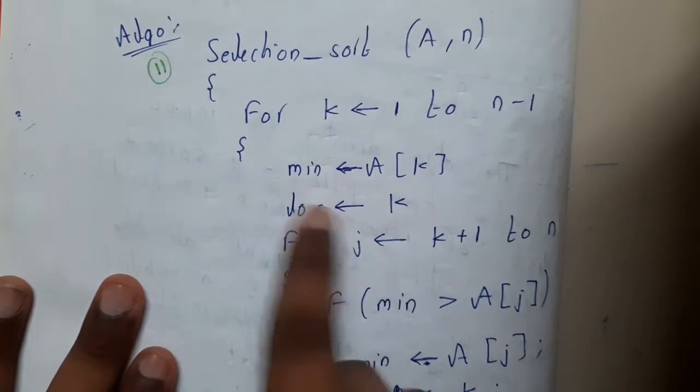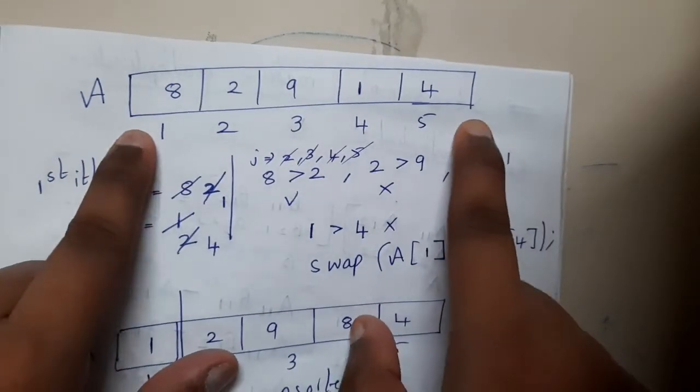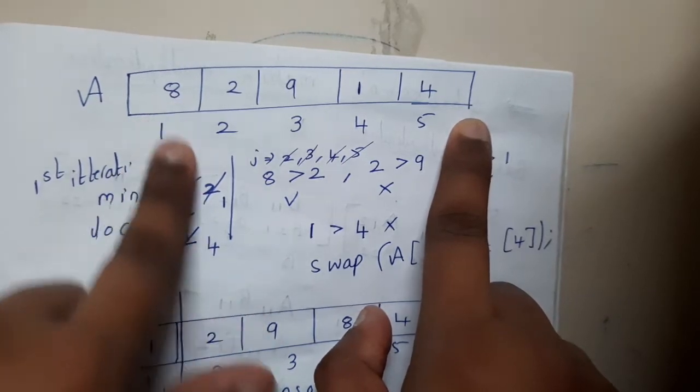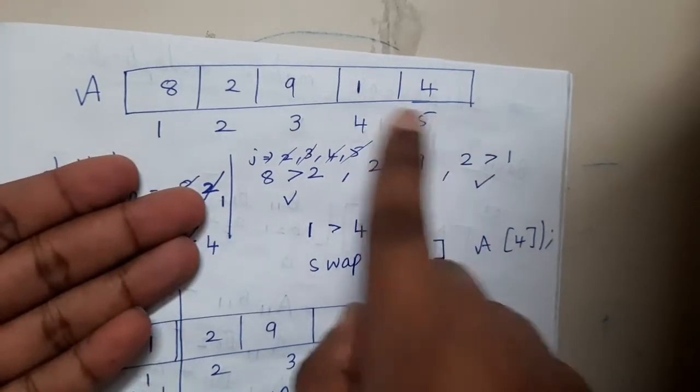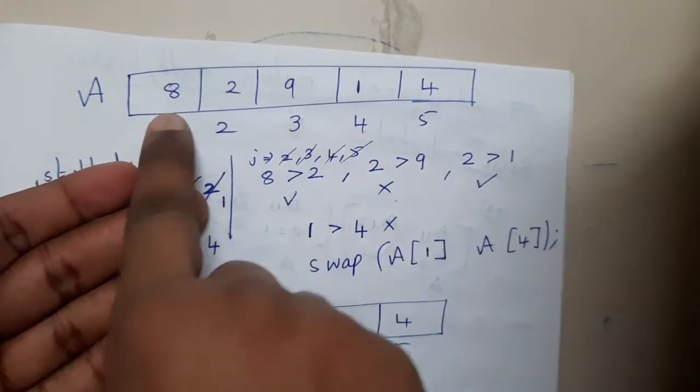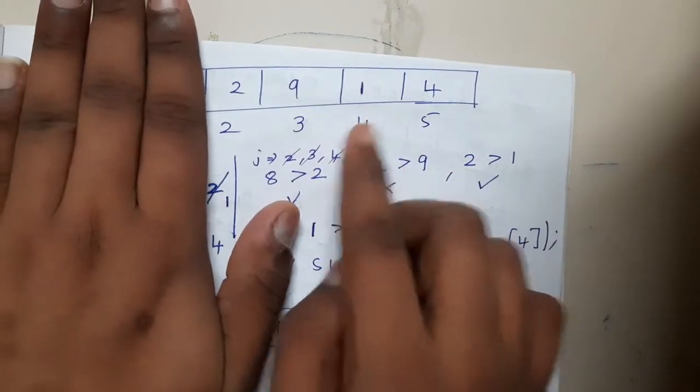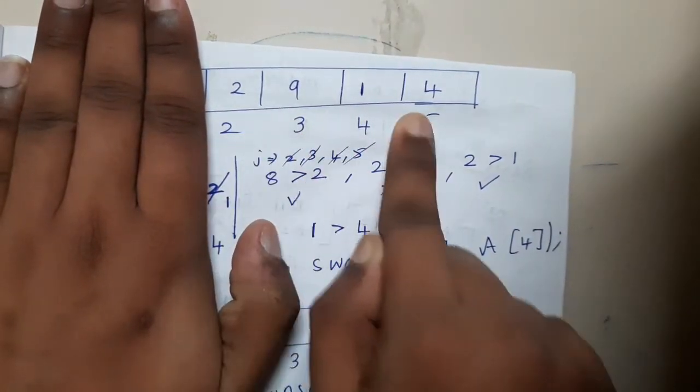When there are no sorted elements, you consider the first element to be sorted. You find the minimum and push it here, then consider this as sorted. Later on, you continue like that step by step. That is why k is the location.